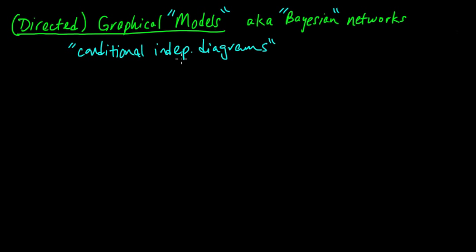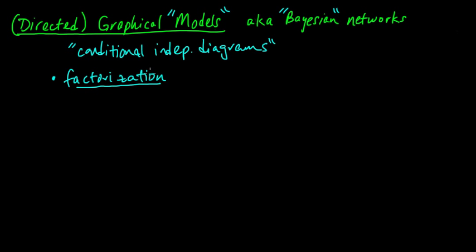That's what a Directed Graphical Model is. They do so by saying that the joint distribution has to factor in a certain way. The key notion behind Graphical Models is factorization — that is the essential thing that's going on: factorization of the probability distribution.